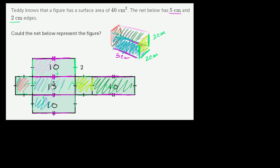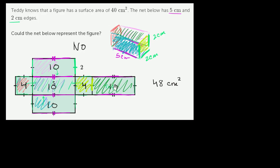These two sections right over here are 2 centimeters by 2 centimeters, so they're each 4 square centimeters. So what's the total surface area? 10 plus 10 plus 10 plus 10 is 40, plus 4 plus 4 gets us to 48 square centimeters. So could the net represent the figure with a surface area of 40 square centimeters? No — this represents a figure that has a surface area of 48 square centimeters.